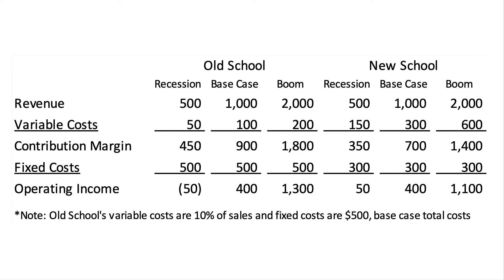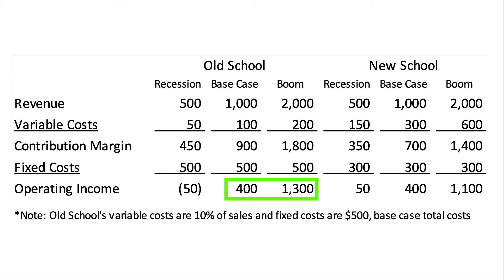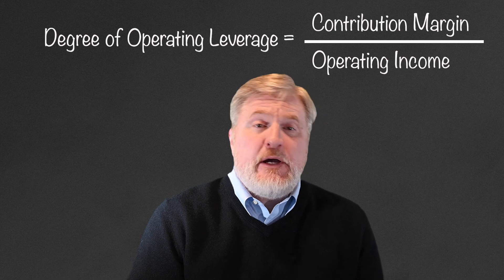How do you measure that? Look at the operating income for all three scenarios. When things improve for Old School, they really improve a lot. But when things go badly, Old School begins losing money. New School may not make much in a recession, but they're not going to go bankrupt either — the same can't be said for Old School. The degree of operating leverage is measured as contribution margin divided by operating income.